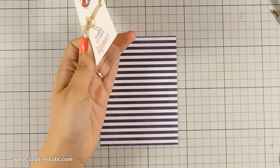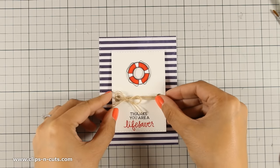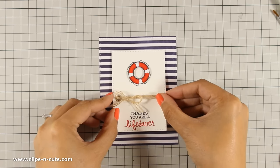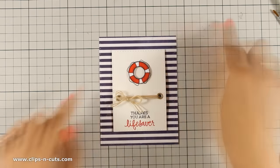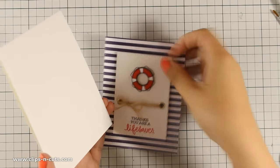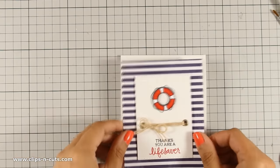Now that my main panel is ready, I am going to stick it on top of the patterned paper using some foam tapes at the back and this will add just a little bit of dimension. So finally I am going to stick this with some tape adhesive on my card base.